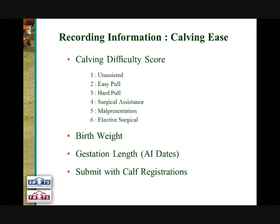In association with Calving Difficulty Scores, two other pieces of information also go into the calculation of the Calving Ease EBVs: birth weights, which is the weight of calves at birth or shortly afterwards, and gestation length information, which is generated from the submission of AI dates. So all three pieces of information — Calving Difficulty Scores, Birth Weights, and Gestation Length — should be submitted by stud producers in association with their calf registrations.